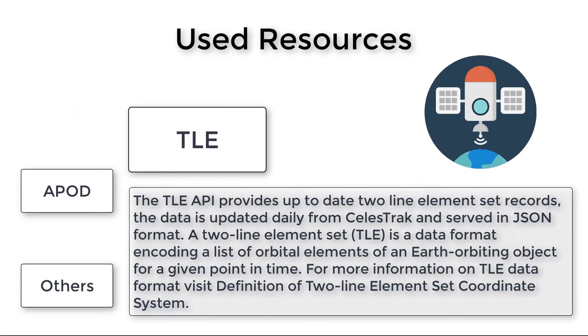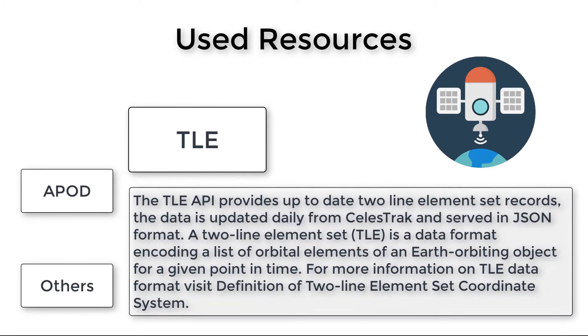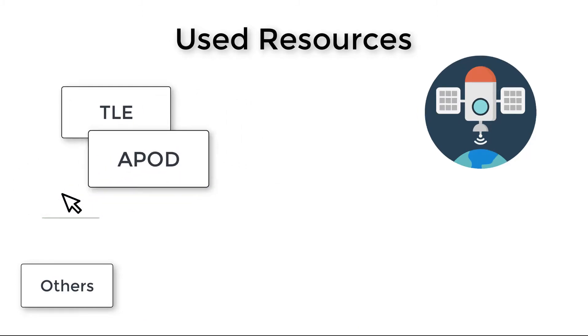The TLE API, or two-line elements, gives us the whereabouts of a satellite in two lines. We use that data, extract the necessary information, make it human-readable, and plot it in beautifully crafted maps.